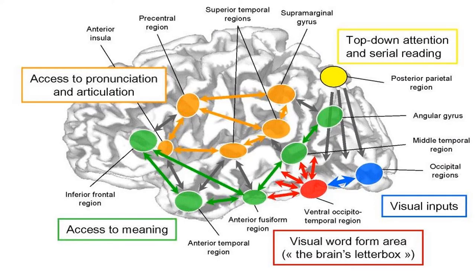Here we see a more detailed illustration of what is going on during reading. The visual area is involved, the parietal lobe is involved in converting visual information into auditory information, Wernicke's area helps to understand the meaning, and Broca's area is also involved with grammar and articulation.